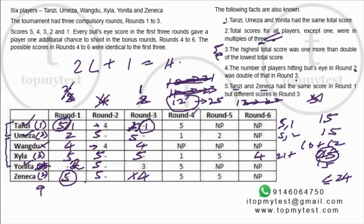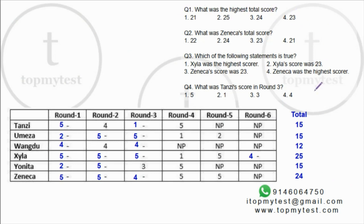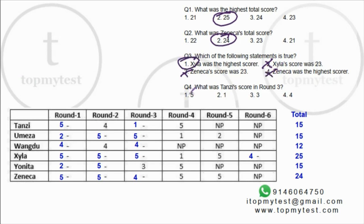Answering the questions: Q1 — Highest total score is 25. Q2 — Zeneca's total score is 24, option 2. Q3 — Xyla is the highest scorer, not 23 — false; Zeneca's score was 23 — false; the correct answer is option 1 confirming Xyla as highest. Q4 — Tanzi's score in round three is 1. That completes Set 65 — a mathematical set more than a classic games-and-tournaments problem.